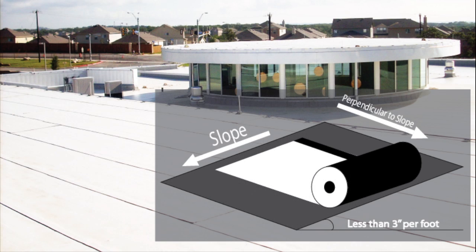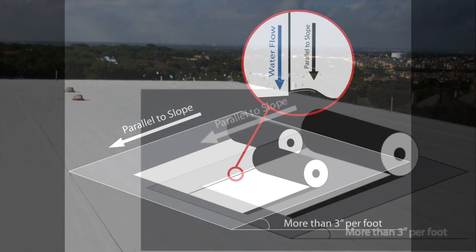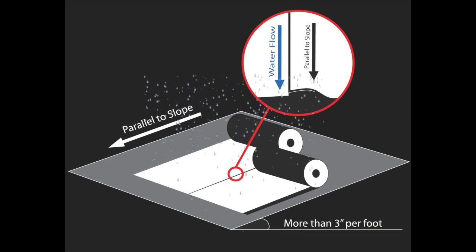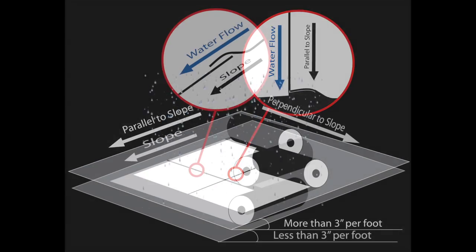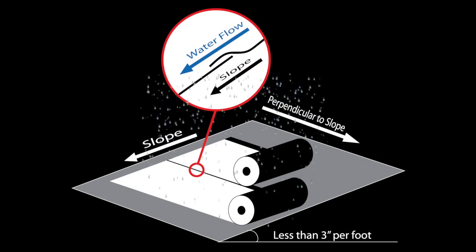For slopes less than 3 inches per foot, install the cap sheet perpendicular to the slope. For slopes 3 inches per foot and over, SPS torch-grade membrane should run vertically or parallel to the roof slope. All laps must be parallel or perpendicular to the slope of the roof so that water is never running against the lap.